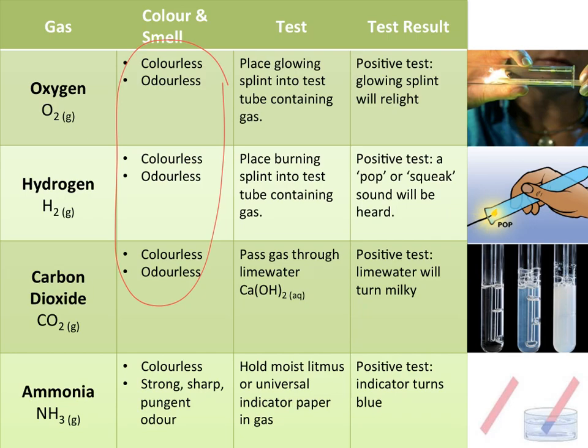For oxygen, we're going to place a glowing splint into the test tube containing the gas. If this glowing splint relights — a glowing splint doesn't have a flame, it's just the orange embers — if that relights, then we're in the presence of oxygen. Remember, oxygen can cause combustion; it's one of the necessary three things for fire.